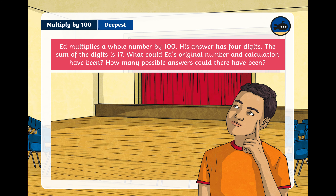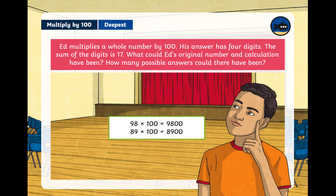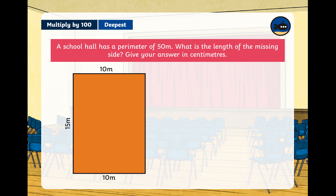It could have been 98 times 100, because 9 add 8 is 17. Or it could have been 89 times 100, because 8 add 9 is 17. You needed to think of two digits which add together to make 17, and also remember that when you multiply by 100, the answer ends in two zeros — there will be nothing in the tens or ones column.